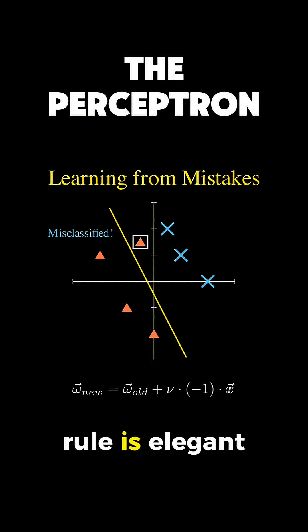The perceptron update rule is elegant. We take our old weight vector and add a correction term. This correction is the learning rate multiplied by the misclassified point's vector and the direction sign, negative 1 in this case, since we want to push the boundary away.